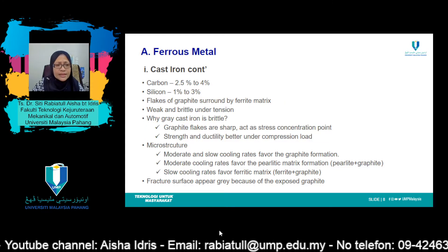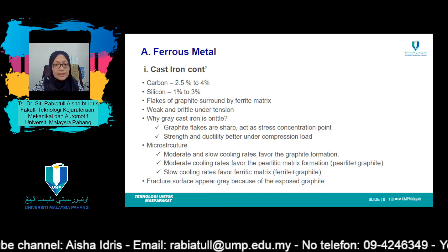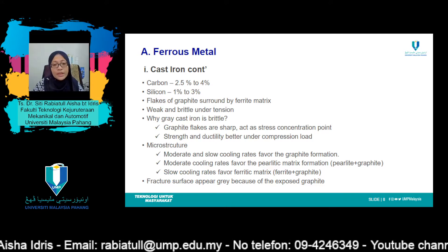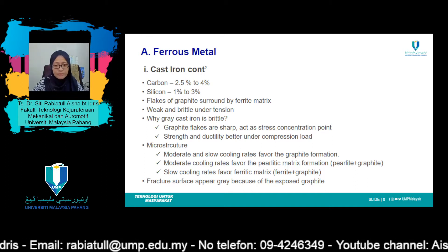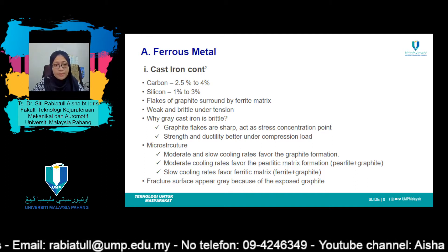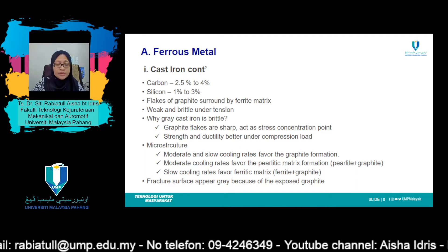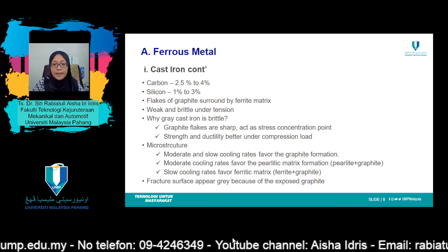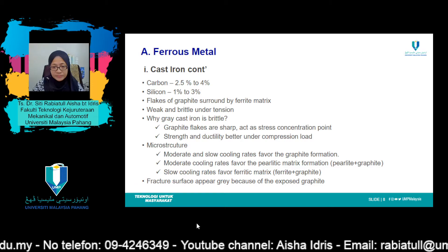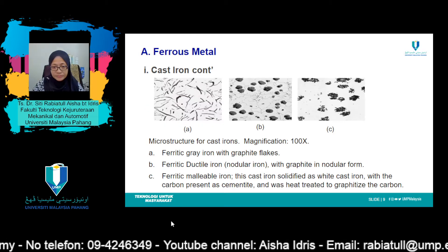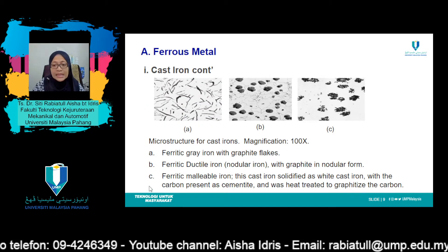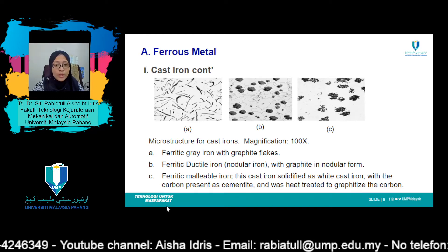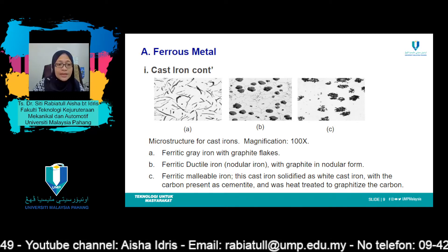For most cast irons the carbon exists as graphite, and both microstructure and mechanical behavior depend on composition and heat treatment. The most common cast iron types are gray, nodular, white, malleable, and compacted graphite. The list can be seen in figures A, B, and C, together with their microstructures.